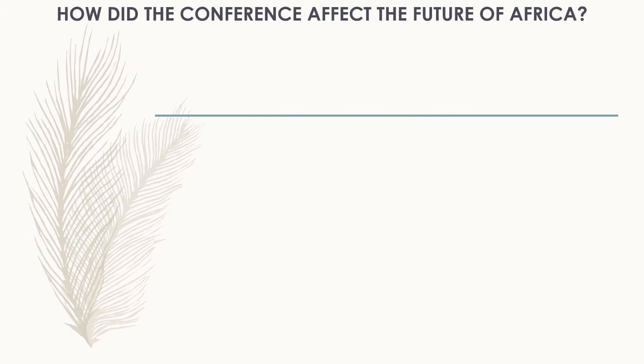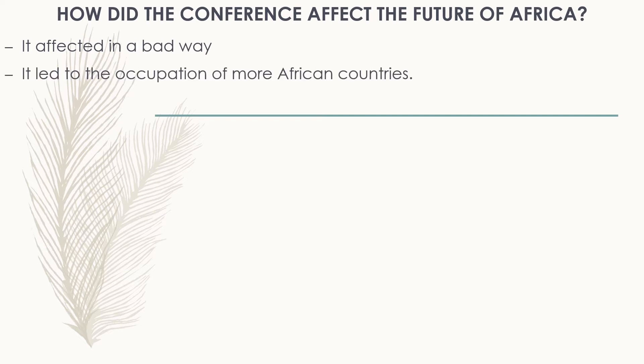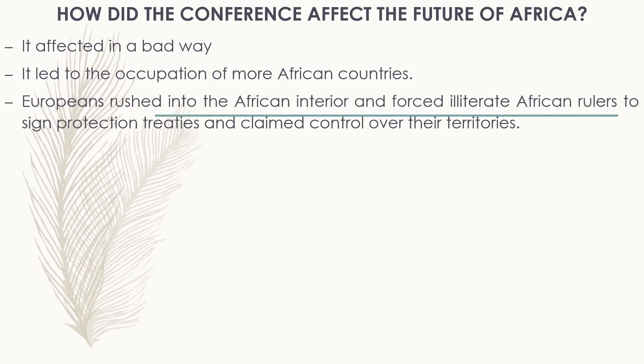The third decision was about protecting treaties. Countries occupying territories were supposed to sign treaties with local chiefs. Regarding how the conference affected the future of Africa — it affected Africa in a bad way. It led to the occupation of more African countries, as Europeans rushed into the African interior.